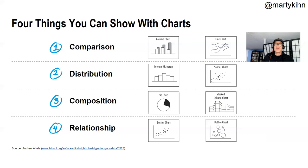In terms of the craft, there are just a few things you can show with charts. Comparisons — one thing versus another. Distribution — how do a bunch of different discrete variables compare over time, how do they distribute across a different discrete interval? Then composition — how much does one thing make up of another? And then relationships — how do things relate to one another? Things like scatter charts.